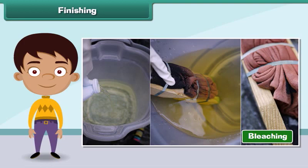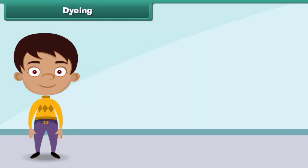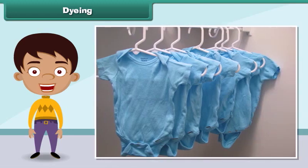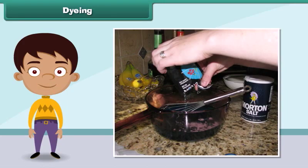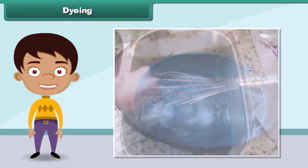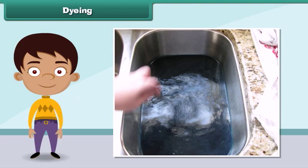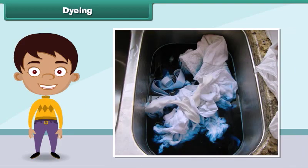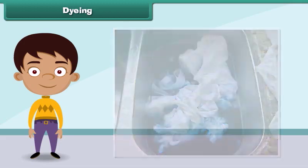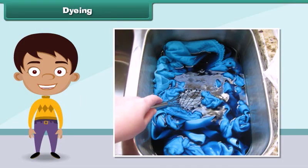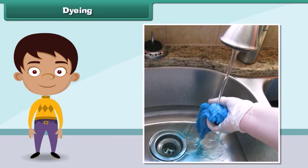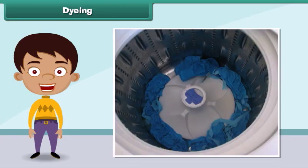Dyeing a fabric means giving a new color to the fabric. To dye a fabric, first a solution of dye and salt in warm water is prepared. Next, the fabric is dipped in the solution. Then the fabric is removed from the solution after an hour and washed. Finally, the fabric is dried.